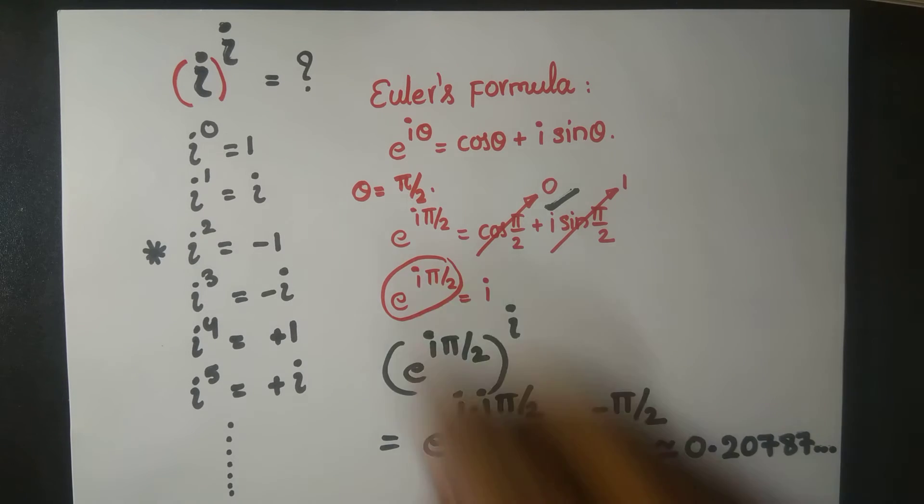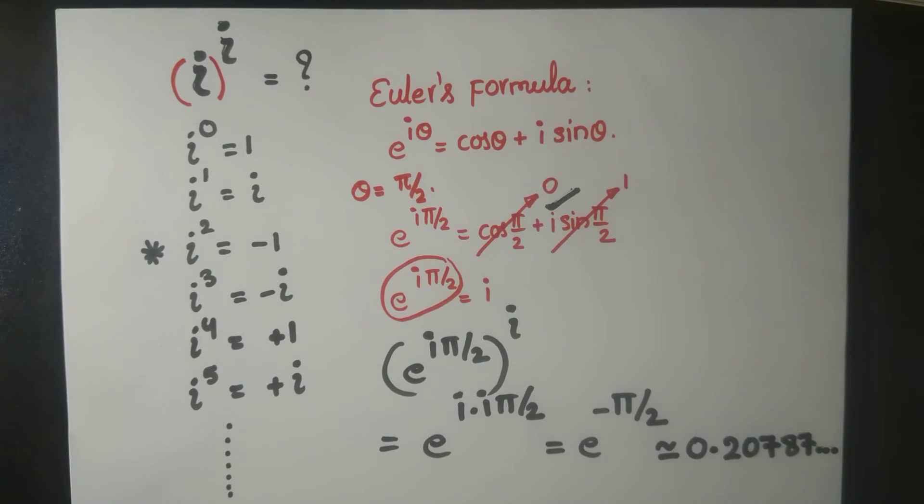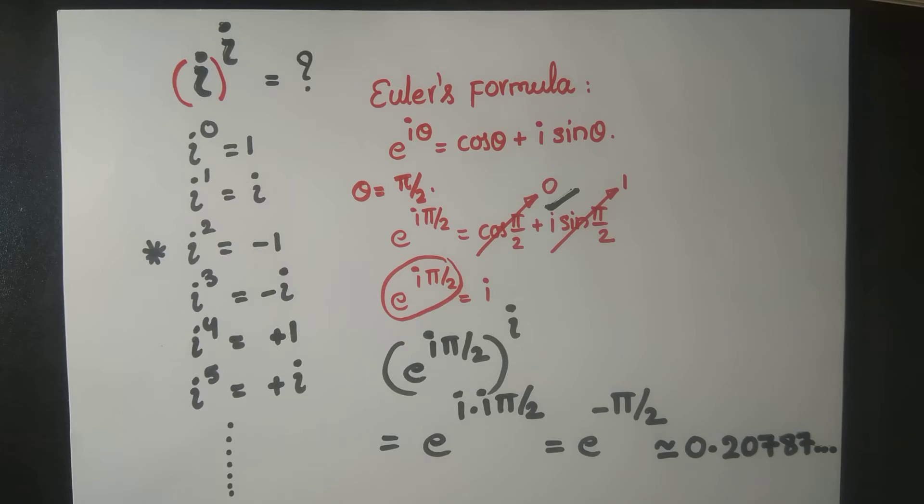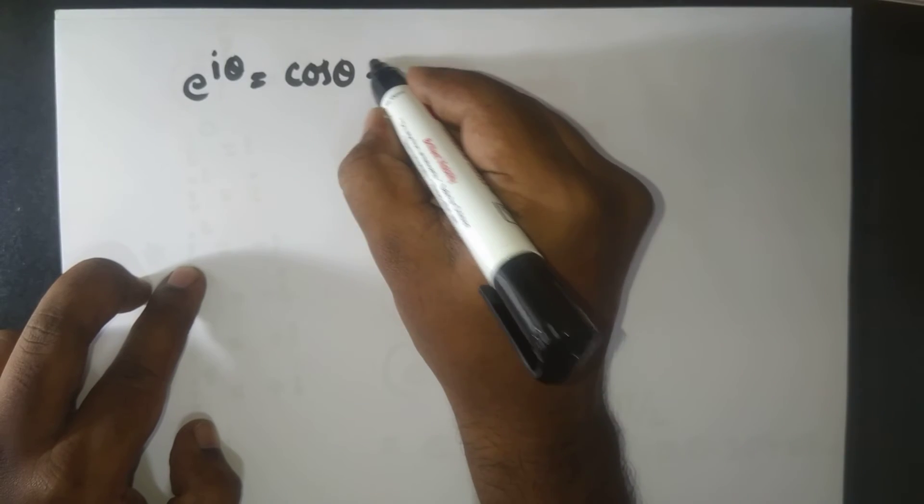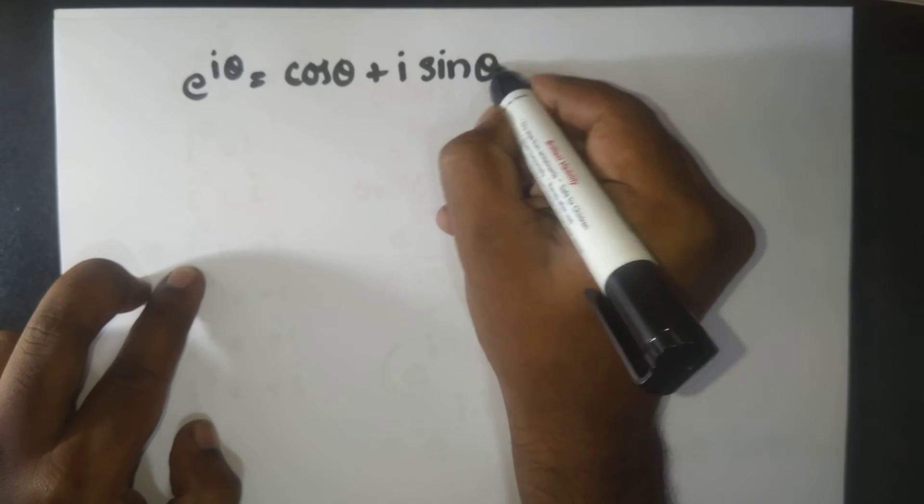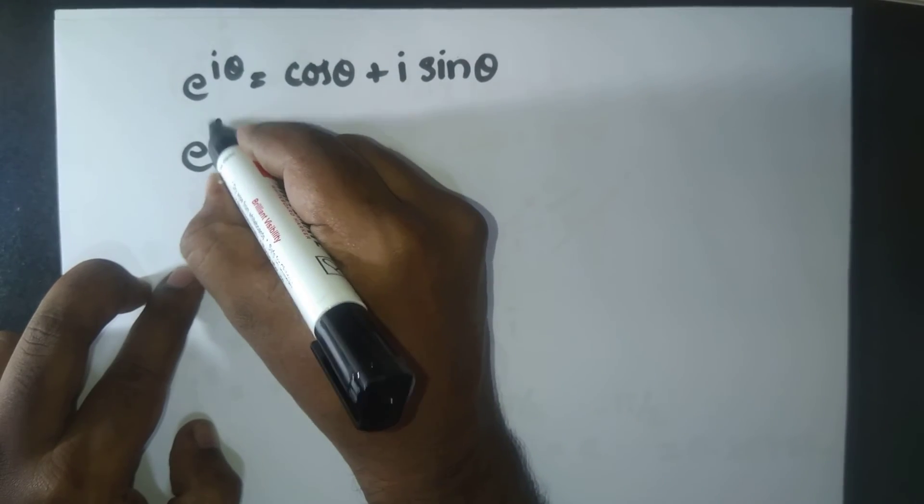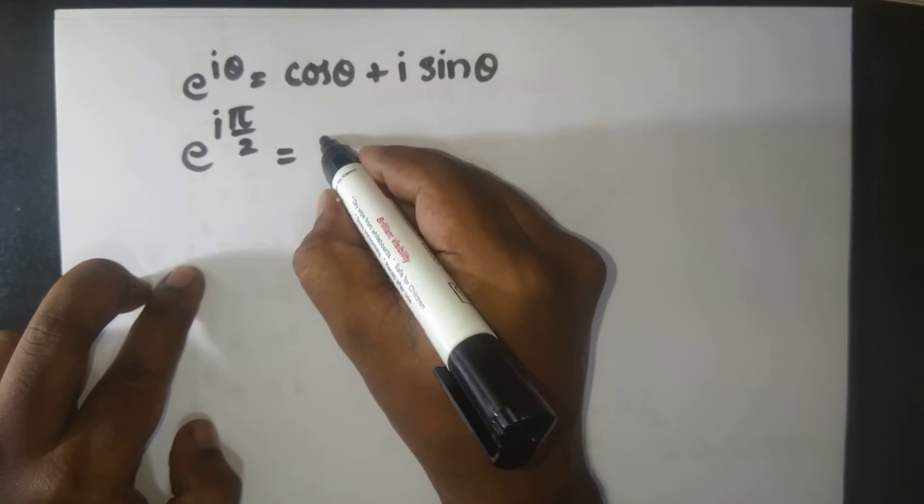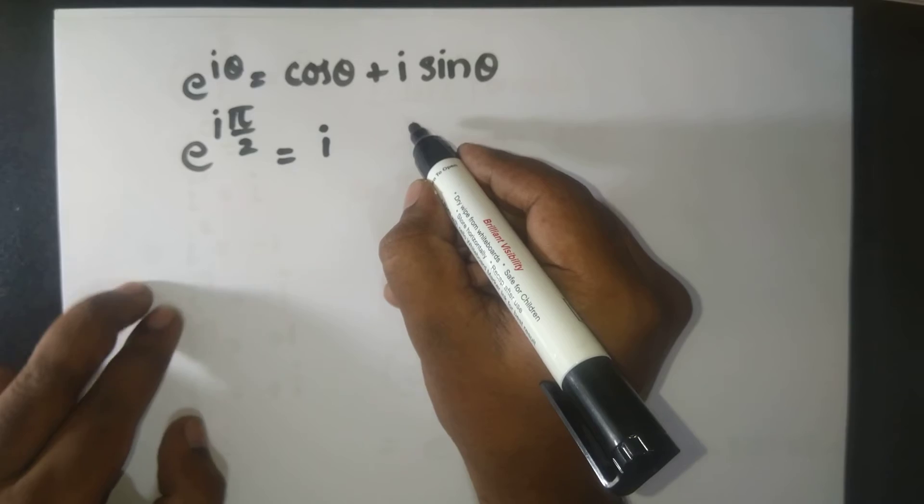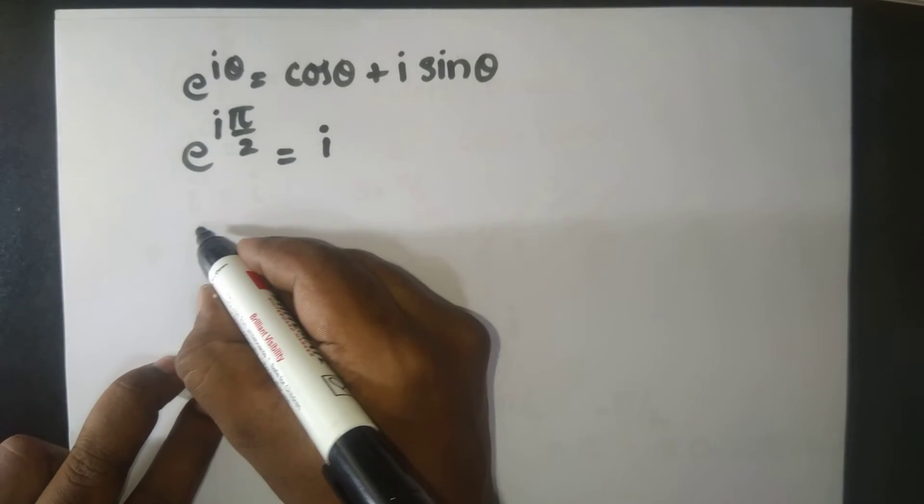But hold on, things are not done yet. We need to solve it further. For example, not only is i^i equal to 0.2078795 and so on, there's also something like this. Because e^(iθ) equals cos θ plus i sin θ. We plugged in θ as π/2, then cos π/2 is 0, then we got i sine π/2 where sine π/2 is 1, so therefore it is i.